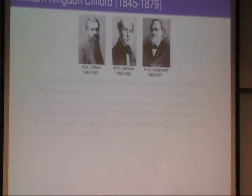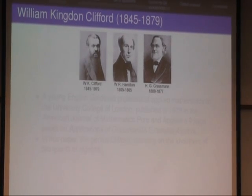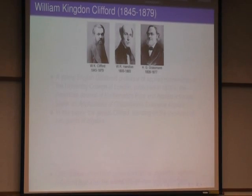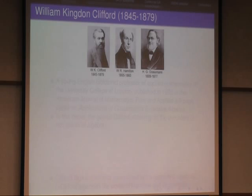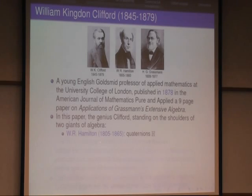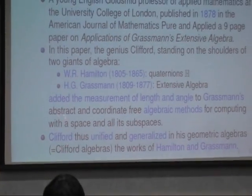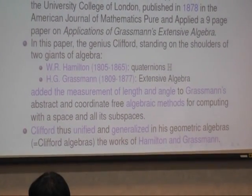This is mainly based on the work of these three people, starting with Hamilton who is famous for the quaternions, and Grassmann who like me was a hobby volunteer mathematician, just a school teacher, and he invented extensive algebra, the outer product. Based on the work of the two, William Clifford was a young Goldsmith professor of applied mathematics in London, and in 1878 he published a paper titled Applications of Grassmann's Extensive Algebra. In this paper, he unified the work of Hamilton on quaternions and Grassmann on extensive algebra by adding the measurement of length and angle to Grassmann's algebraic methods.